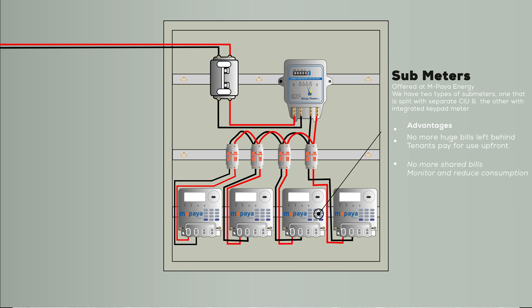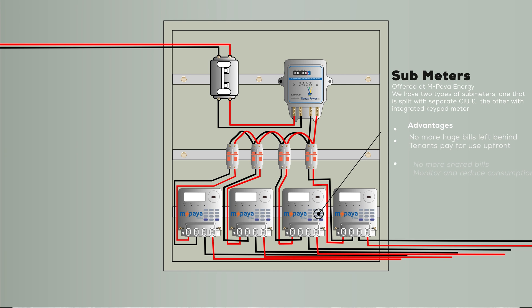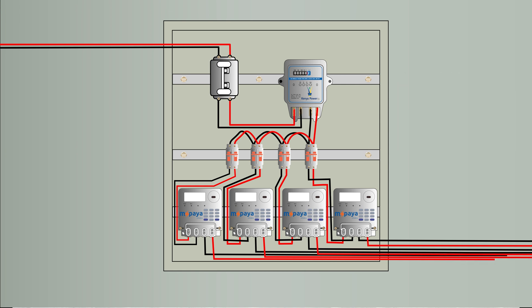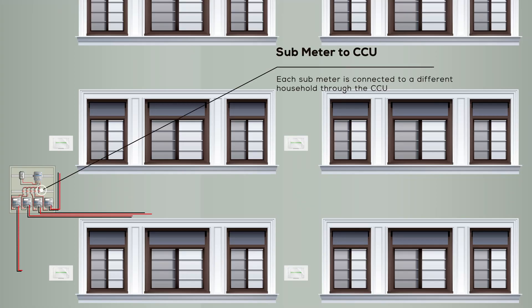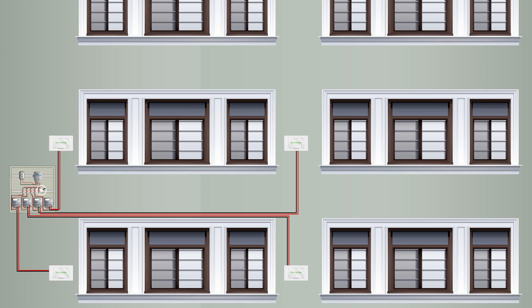We have two types of sub-meters: one that is split with a separate CCU, and the other with an integrated keypad meter. The advantage of the sub-meters is to make sure each household pays the bill for the power they consume. Each sub-meter then connects to a separate CCU in different households, so the sub-meters help landlords know exactly how much power each tenant is using, and each household can pay for the power they use. That is how we get power from the KPLC power pole into our houses.